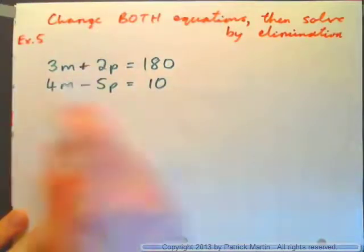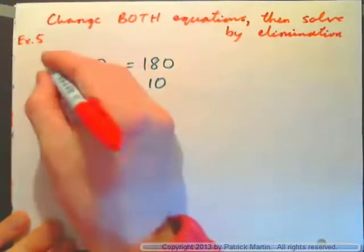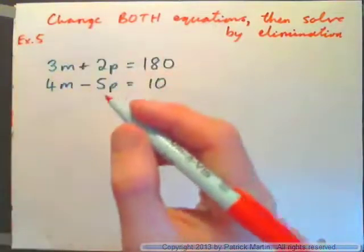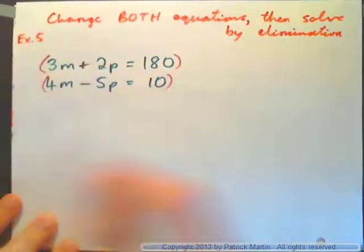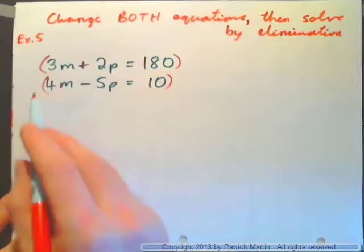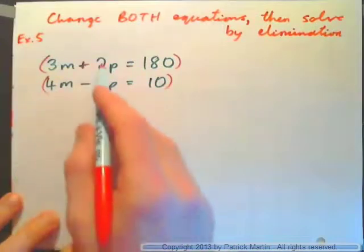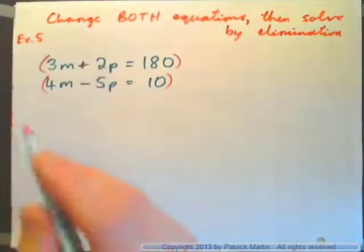We have to multiply both equations by something. We know that much. We need to multiply across both equations by something. And so here's the deal. 2 and 5. What's a common multiple of 2 and 5?